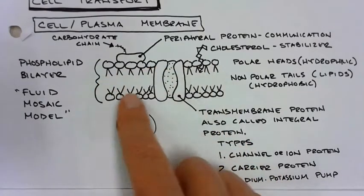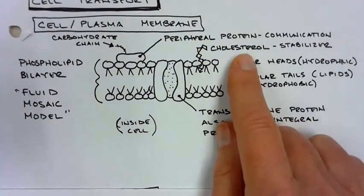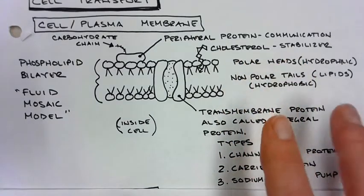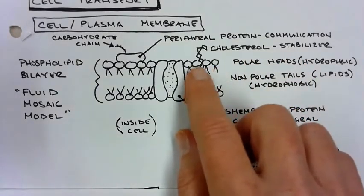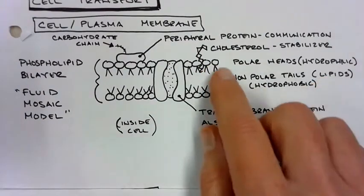Also within the phospholipid bilayer, you're going to see this little molecule here. It's called cholesterol. We actually need a little bit of cholesterol and it's a stabilizer. It stabilizes this membrane because these are like lots of little tiny balls that are three-dimensional all the way around.